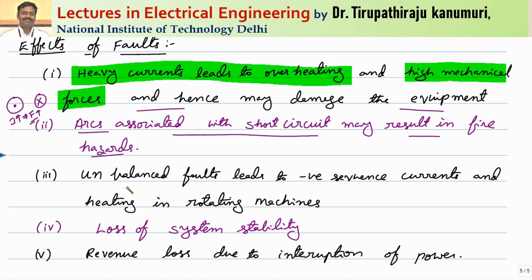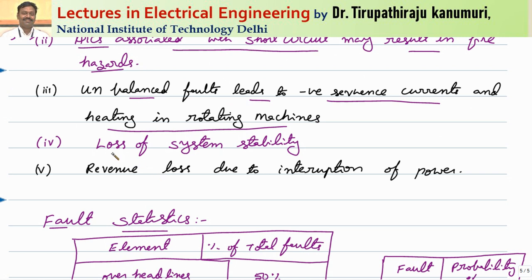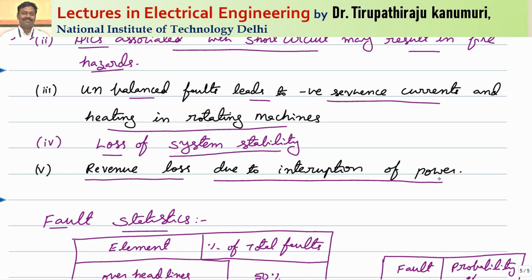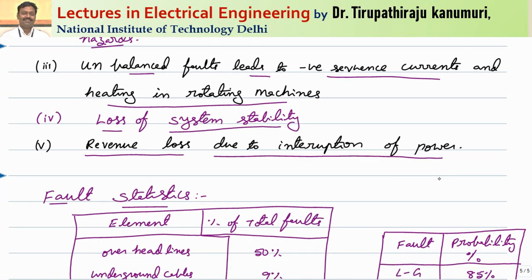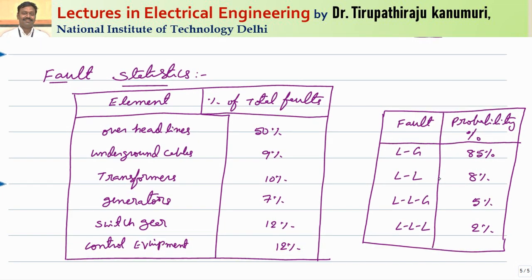Arcs associated with short circuits may result in fire hazards. Unbalanced fault currents lead to negative sequence currents and hence heat in rotating machines. In interconnected systems, if a faulted part is not disconnected, it leads to complete instability due to mismatch in frequencies of different alternators or stations — causing loss of system stability. There will also be a loss of revenue due to interruption: the generating station loses income, and industries lose production capability.